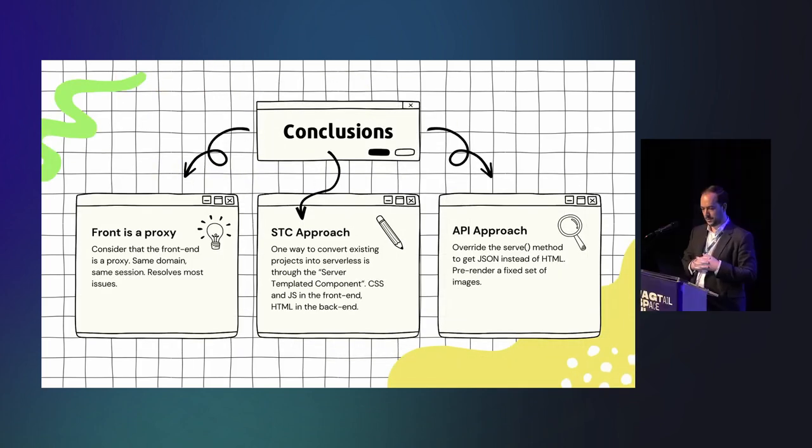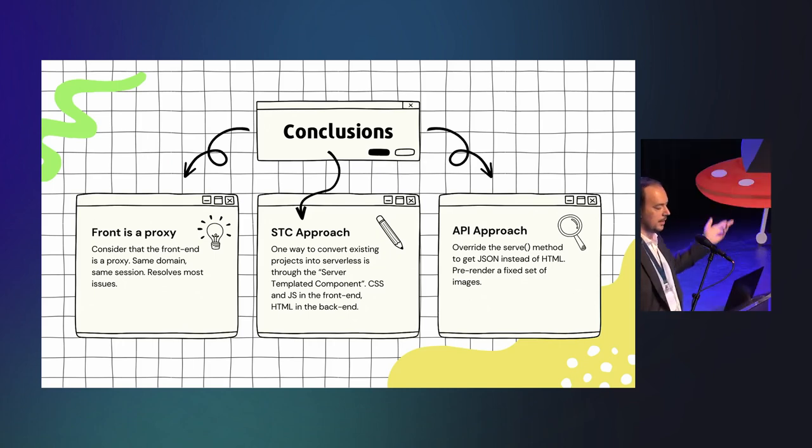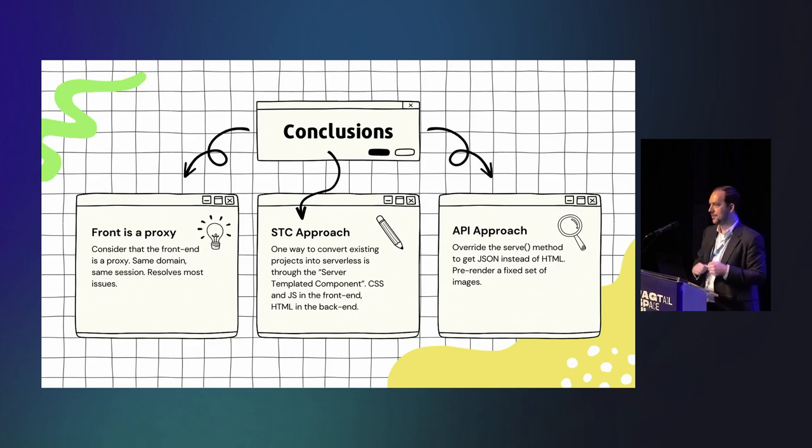So, as a conclusion, the front end is a proxy. That's really the core idea behind this approach is to consider that it's just a pass through with some modifications on the content. So, we kind of give style to the Wagtail content. There's two approaches to this. There's the server-templated component approach that is kind of a hack, but definitely works. So, you send HTML, you transform the HTML into better HTML, let's say, with JavaScript and CSS. And there's the API-based approach that is overriding the serve method and that uses a fixed set of images to do the rendering.